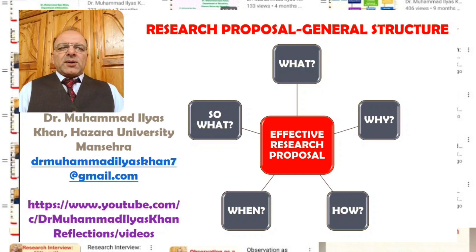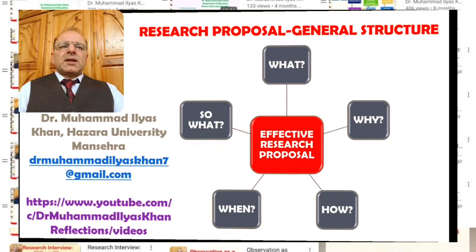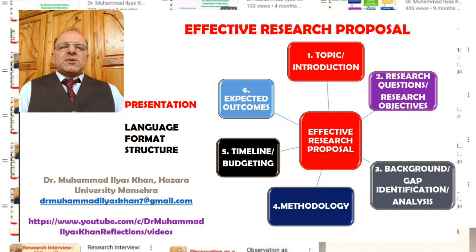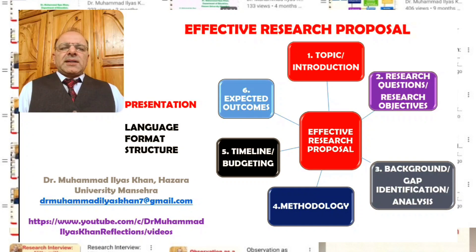These are the five important questions around which the structure of a general research proposal revolves. An effective research proposal generally has six components, each clearly and effectively presented. The first is that the research topic is clearly and concisely presented — the topic is catchy and interesting and reflective of an important area in the field of study in which the particular research is being conducted.